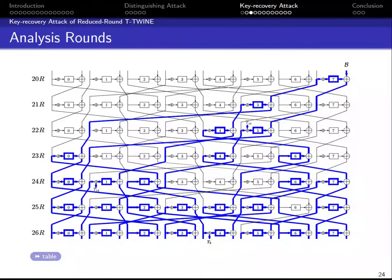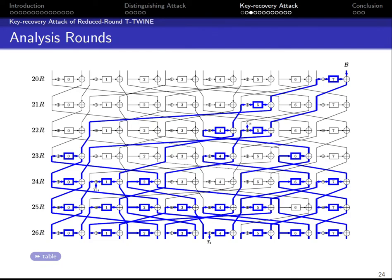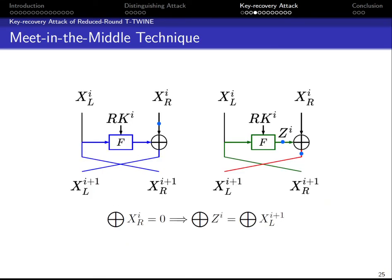Like any integral cryptanalysis, we append some rounds after the distinction. In our case, we append 7 rounds after this distinction for T-Twine-80 and 8 rounds for T-Twine-128, then guess some round keys to check if the last nibble is balanced or not. The guessing step for T-Twine-80 includes 19 round keys or 76 bits of the key. If we guess these directly with 2^69 data complexity, the time complexity would exceed exhaustive search.